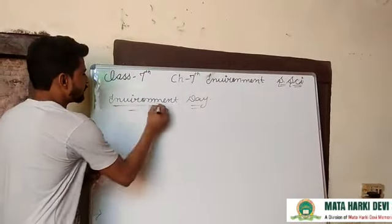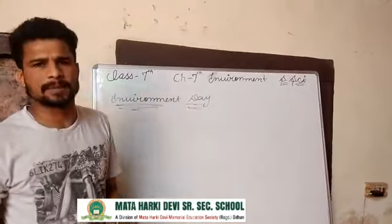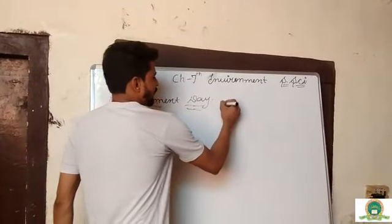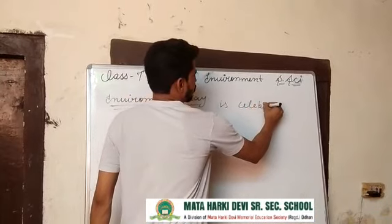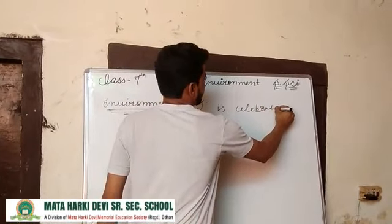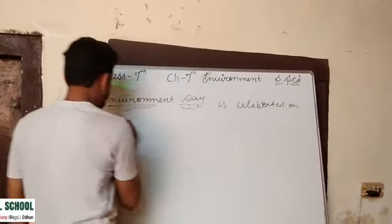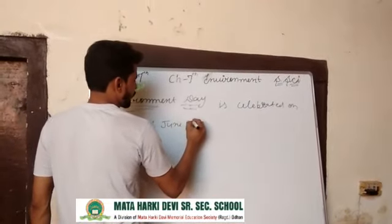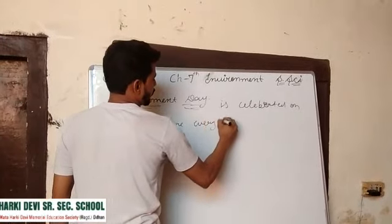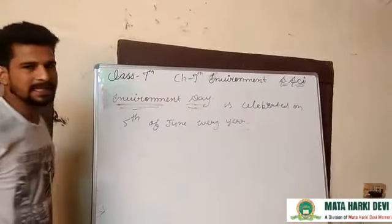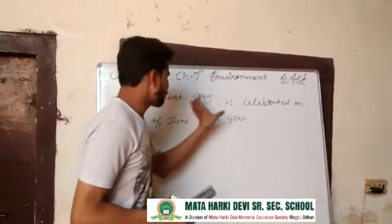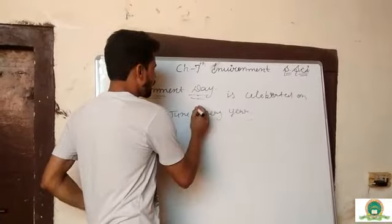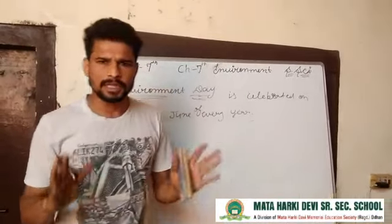Now, a most important point in this chapter: Environment Day is celebrated on 5th June every year.